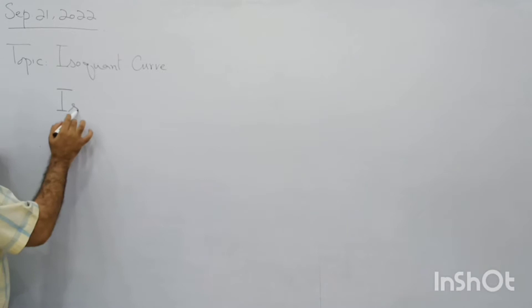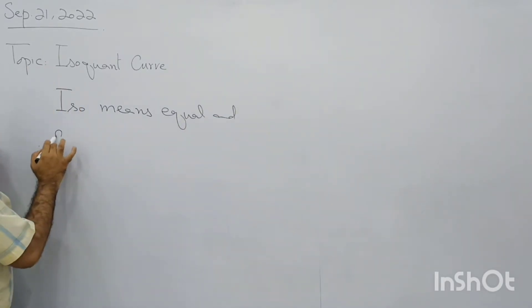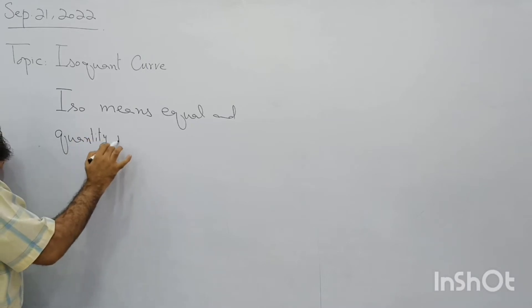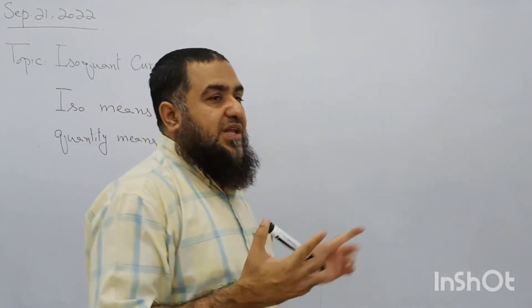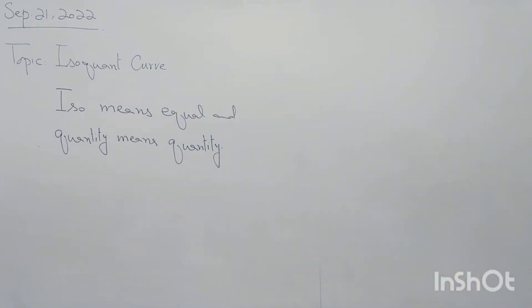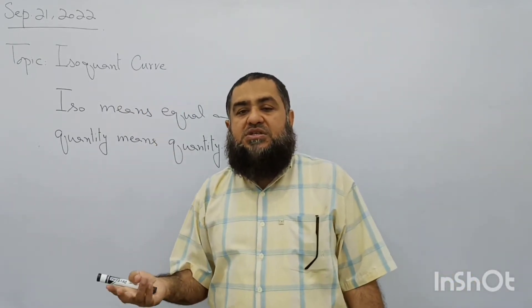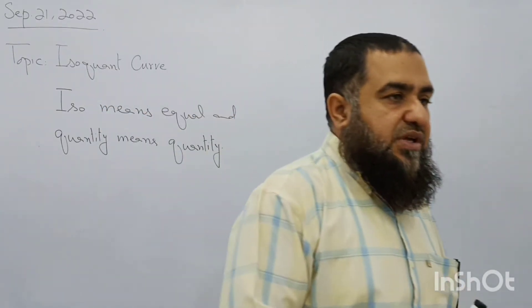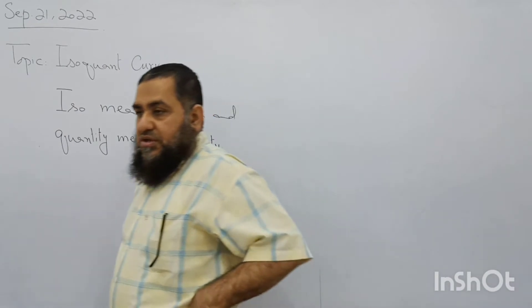Iso means equal and quant means quantity. In other words, it is an equal quantity curve. As the word is telling us, this is a curve which has equal or same level of output produced by different combinations of labor and capital. We have different combinations of labor and capital, and if they are producing the same level of output, that output level can be represented by a curve called the isoquant curve.